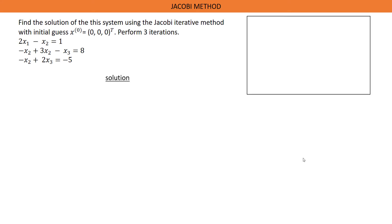Before we solve this question, let's look at some few things to note. An initial guess value of S is given. The first value is S1, so S1's initial value is 0. The second value is S2, so S2's initial value is 0. And the third one is S3, so S3's initial value is also 0.